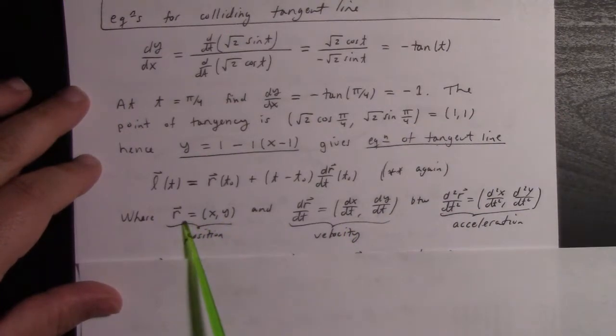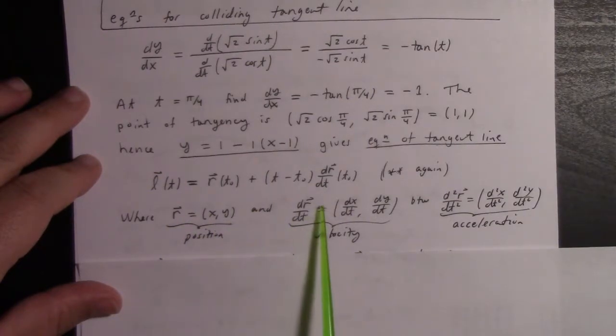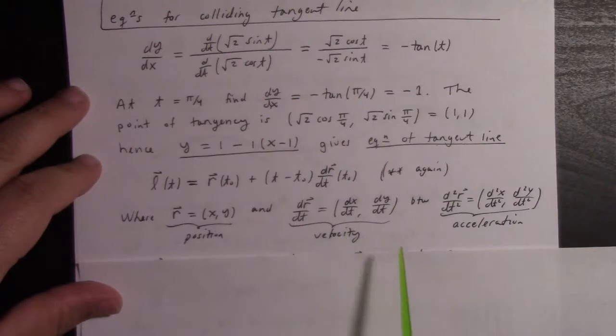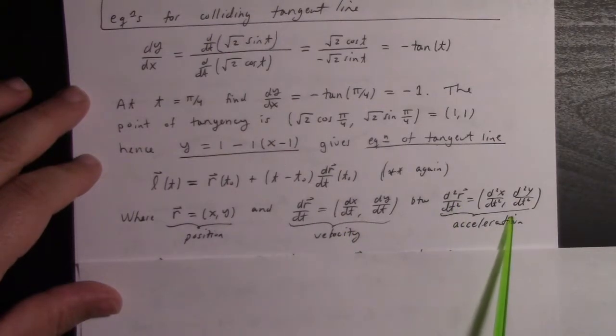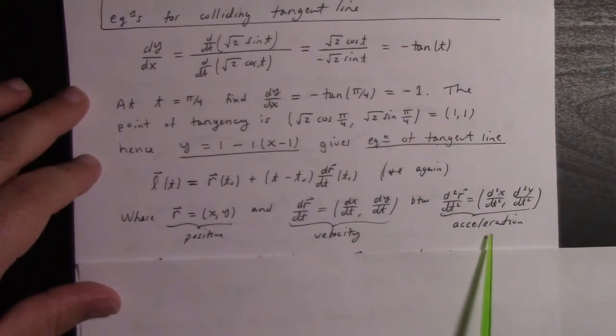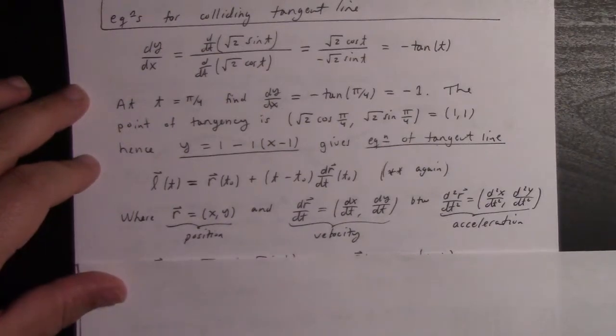By the way, I should mention in such a context, we might say r is the position, whereas dr/dt is the velocity. And for what it's worth, if we differentiate again, we've got acceleration. That's kinematics in a nutshell.